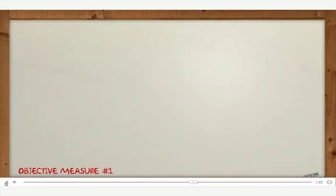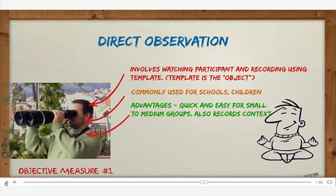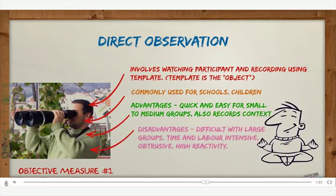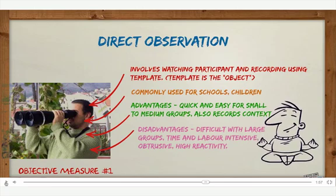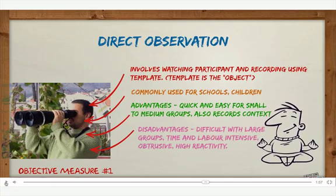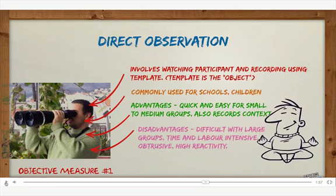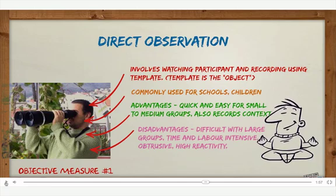The first objective measure is direct observation. It's completed using a template where you watch a participant and mark down how much physical activity they're doing — the template is the object. It's commonly used for schools and groups of children because it's quick and easy for small to medium groups, and it records context such as what type of activity is being done. Disadvantages are that it's difficult with large groups, time and labour intensive, obtrusive since someone is observing you constantly, and it has high reactivity — being watched may cause people to do more or less activity than normal.